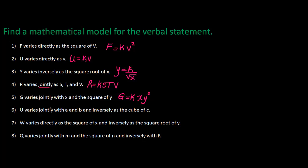U varies jointly with A and B. So U varies jointly with A and B. And inversely, that means I'm going to have something in the denominator as the cube of C, so C cubed.